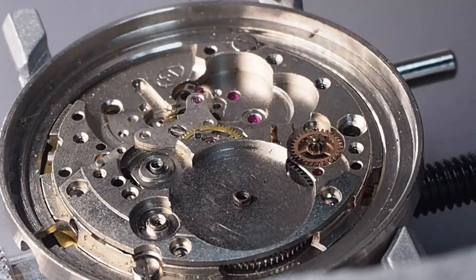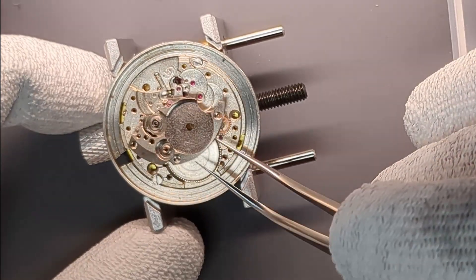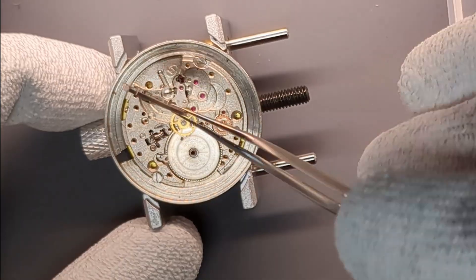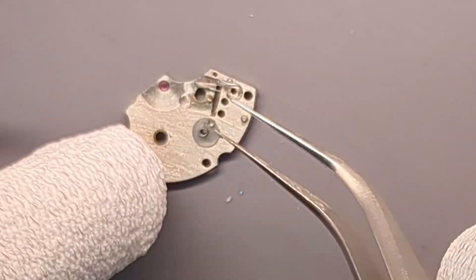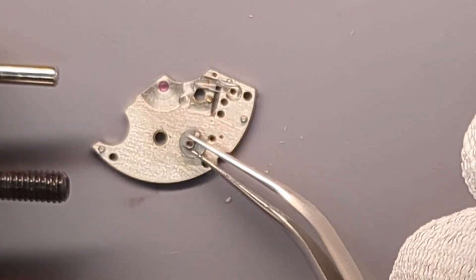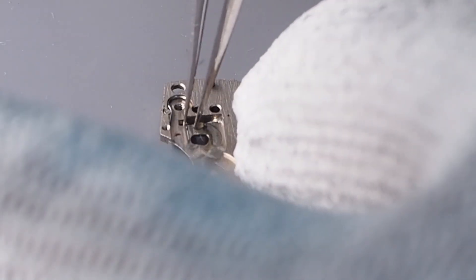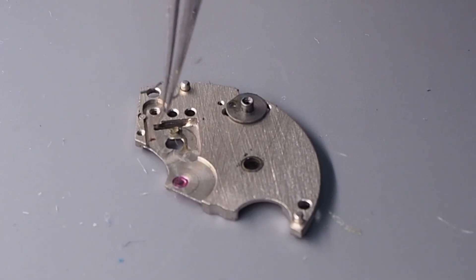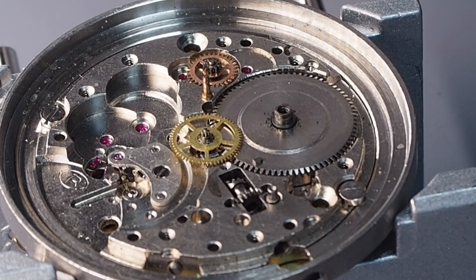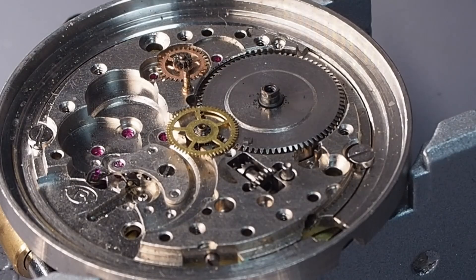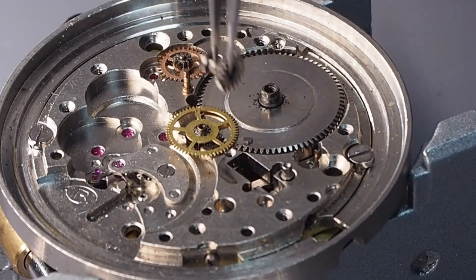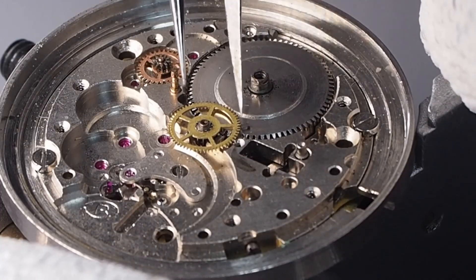Now, I can remove the barrel bridge. There is a small spring and small wheel under the barrel bridge. I need to be careful to not lose it. That spring and bearing allows the crown wheel to float and disengage smoothly when the rotor is driving the ratchet wheel. Now, I'm removing the center seconds pinion and the winding and sliding pinion.